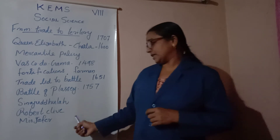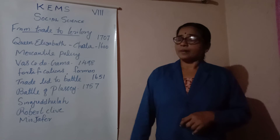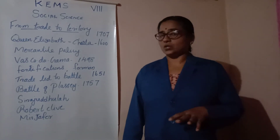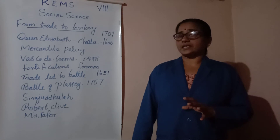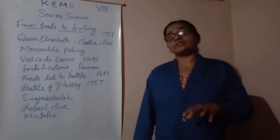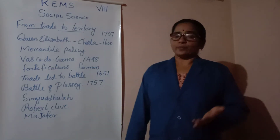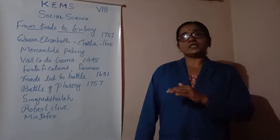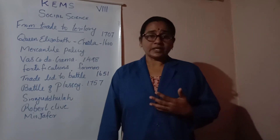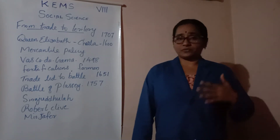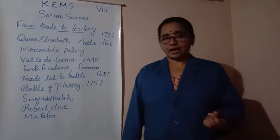In 1756, Siraj ud-Daulah became the Nawab of Bengal. He asked the company to stop fortification, stop meddling in the political affairs of Bengal, and to pay taxes. But the negotiations failed.